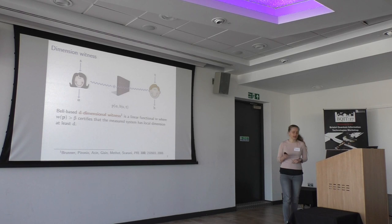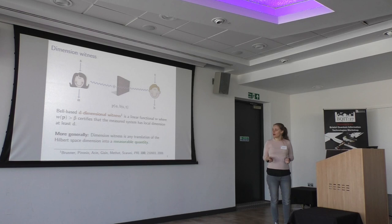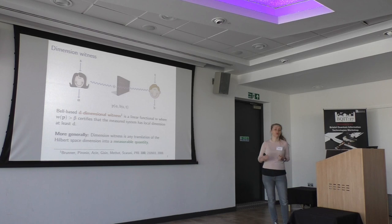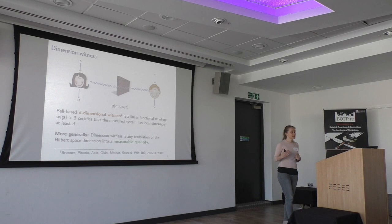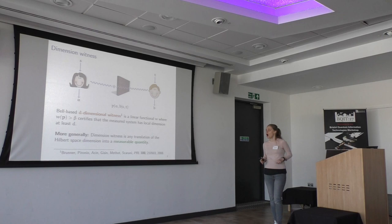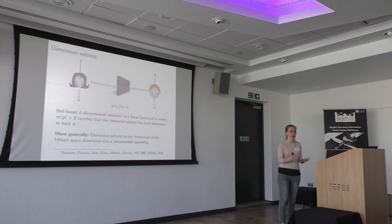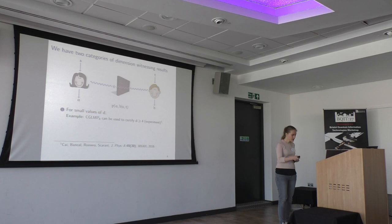Here I'm talking about the local dimension, so this state psi would be living in dimension C^D tensor C^D. It doesn't need to be a linear function — in general, you might be taking some more complicated function of this observed correlation P, or just have some more complicated criteria. The basic idea behind this dimension witness is that there's some kind of translation of this abstract concept of Hilbert space dimension into something which you can observe and measure in your lab, without having the need to trust any devices.